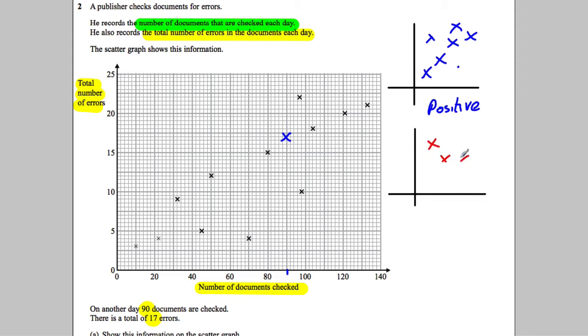If they are going down as they go from left to right, you would call that a negative correlation. And if there is no discernible pattern, so it just looks quite random without any pattern, then you would say no correlation or zero correlation.